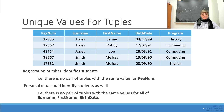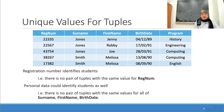The registration number identifies students, meaning no two tuples can share the same registration number. We might also observe that personal data could be used to identify students — for example, we might enforce the rule that the combination of surname, first name, and birth date must be unique.